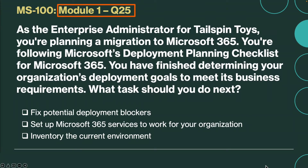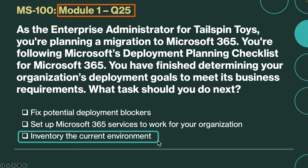Question number 25. As the enterprise administrator for Tailspin Toys, you are planning a migration to Microsoft 365 and following Microsoft 365's deployment planning checklist. You have finished determining your organization's deployment goals to meet its business requirements. What task should you do next? Is it fix potential deployment blockers, set up Microsoft 365 services to work for your organization, or inventory your current environment? The correct answer is inventory the current environment. Once you have determined your organization's goals, the next step is to inventory your current environment.